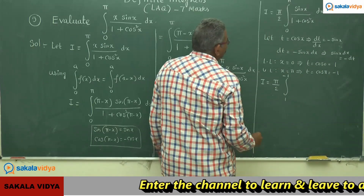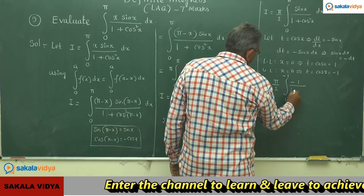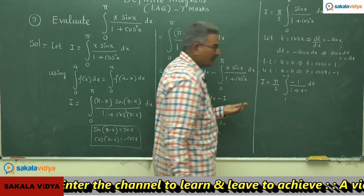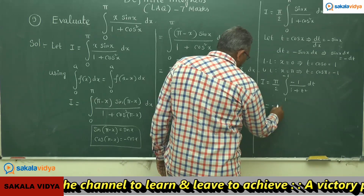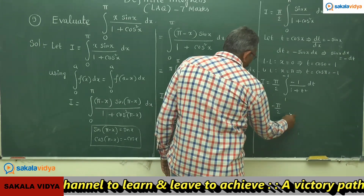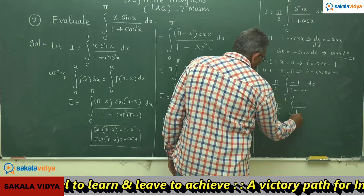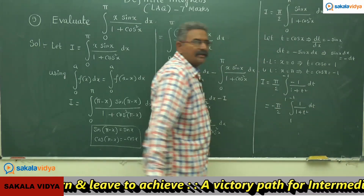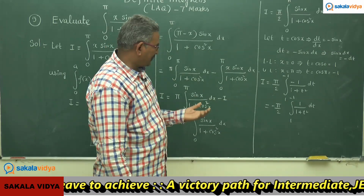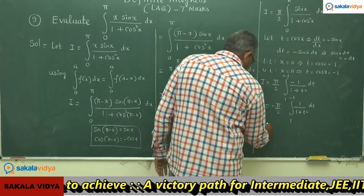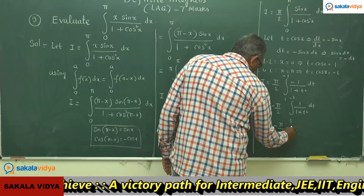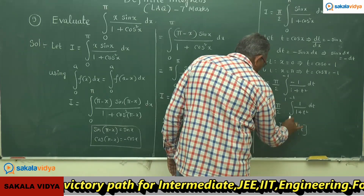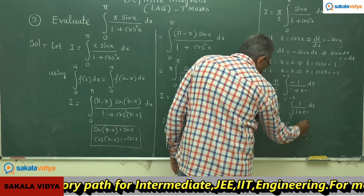We can write this as −(π/2) times the integral from 1 to −1 of 1/(1 + t²) dt. Using the formula: integral of 1/(1 + x²) dx = tan⁻¹(x), this gives minus (π/2) times [tan⁻¹(t)] evaluated from 1 to −1.